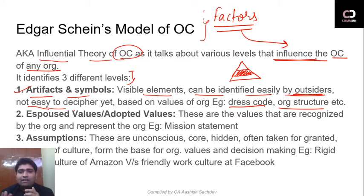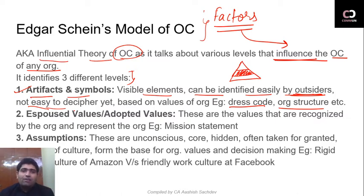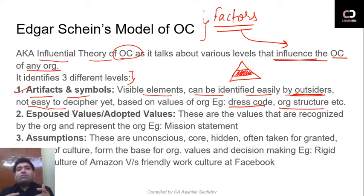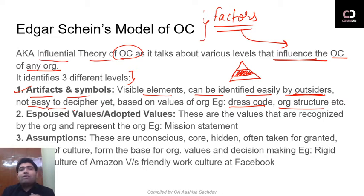I'm relating this to geography and culture. If we talk about dance forms of India — in the northeast, the dance forms are very closed dance forms, because of the terrain there. Similarly, the style of clothing is different in every part of the country. If you go to the south or the north, the attire is different. But it is not easy to decipher why it is worn like that — deciphering that is difficult. Although it helps us understand the culture of that place, that area, that organization — when talking about organizational culture. So this is the first level: Artifacts and Symbols.